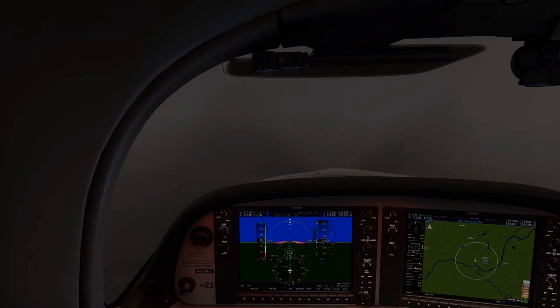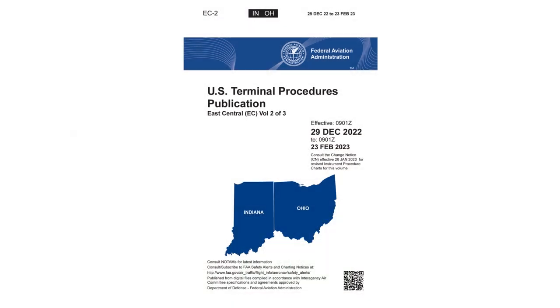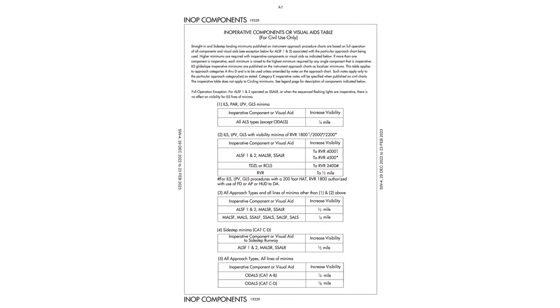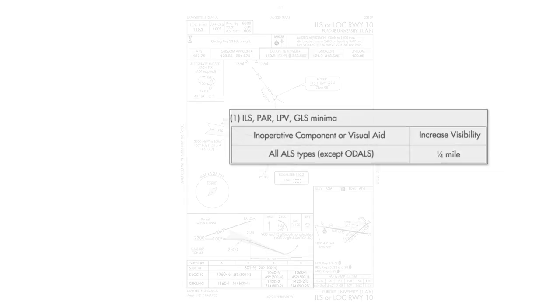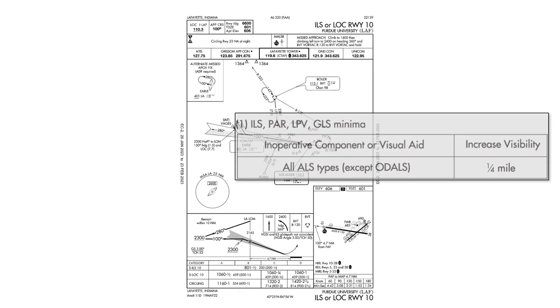It's much more challenging to gain sight of the runway environment, which would allow us to go below minimums and land. Do the regs still allow us to use the half-mile visibility if the approach lights are out? For the answer, we'll need to open up the Terminal Procedure Publication. One of the first pages lists tables for inoperative components. The first table is for ILS approaches like the one we're on, and says that for any approach lighting system except ODALs, we increase visibility minimums by a quarter mile.